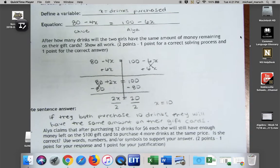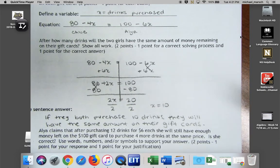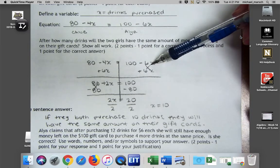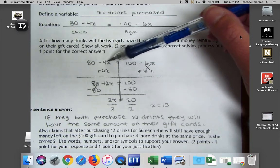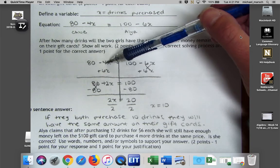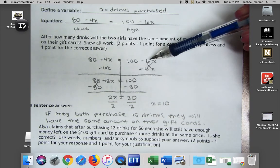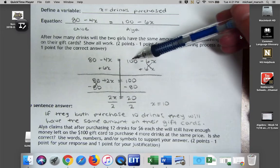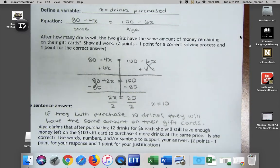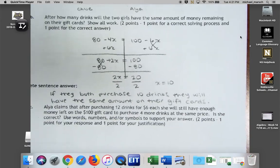Okay, so if I do the math with that, if I put ten in for x, well that makes sense. Four times ten is 40, so 80 minus 40, Chloe's going to have $40 left. Six times ten is 60, 100 minus 60, Alia's going to have $40 left. So that's perfect. Now let's move on to part C and then we're done.